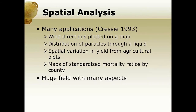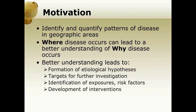There are many applications. Cressey's book in 1993 was probably a very comprehensive book that described all the different approaches. You can think about things like wind directions plotted on a map, distribution of particles through liquid, spatial variation in yield from agriculture plots, or maps of standardized mortality ratios by county. We live in 3D so space can always be a consideration. One of the jokes in statistical methodology is: think about a problem and then ask, what if I made this spatial? There are a lot of aspects to this and I'm going to be very focused in my talk today.